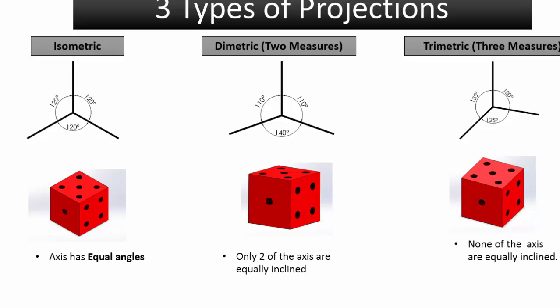There are three types of axonometric projection. They are defined and distinguished by their axis angles.